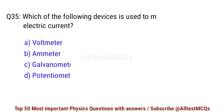Question number 35. Which of the following devices is used to measure electric current? Correct option is B. Ammeter.